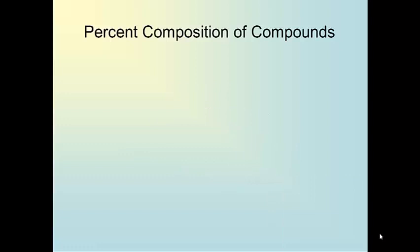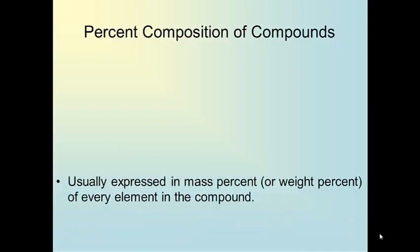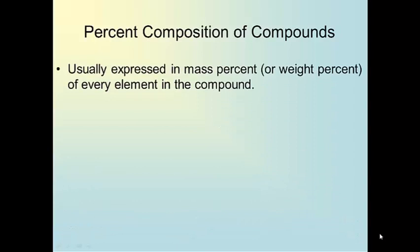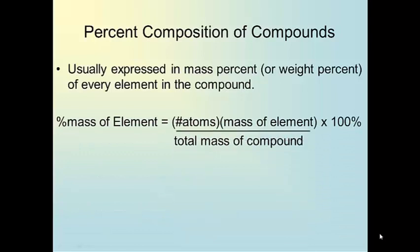This section is about percent composition of compounds, usually expressed in mass percent or weight percent of every element in the compound. I've got a little mathematical computation. This is the one actually your book gives you, but technically speaking, it's real simple. It's going to be part. The mass of the element over whole, which is the mass of the compound the element is in, times 100 will give you the mass percent of that particular element in the compound.